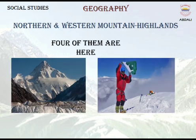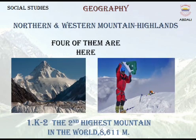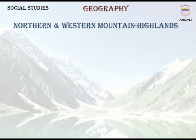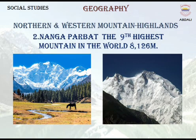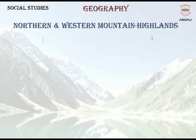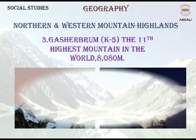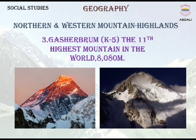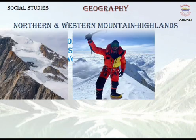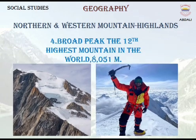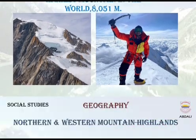Four of them are here. 1. K2 — the second highest mountain in the world, 8,611 m. 2. Nanga Parbat — the ninth highest mountain in the world, 8,126 m. 3. Gasherbrum I (K5) — the 11th highest mountain in the world, 8,080 m. 4. Broad Peak — the 12th highest mountain in the world, 8,051 m.